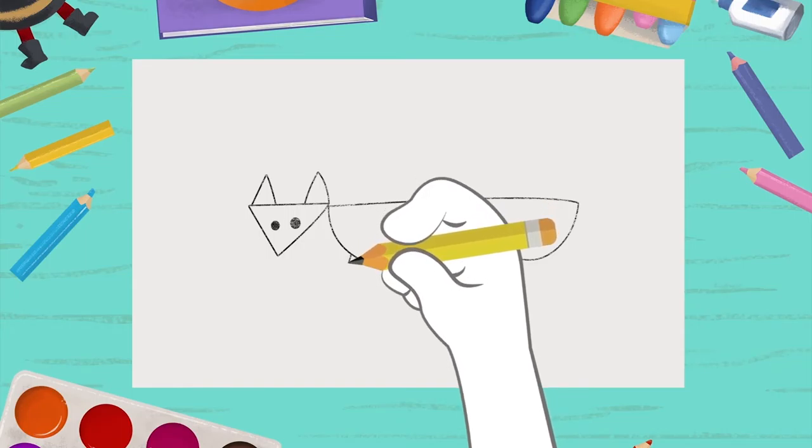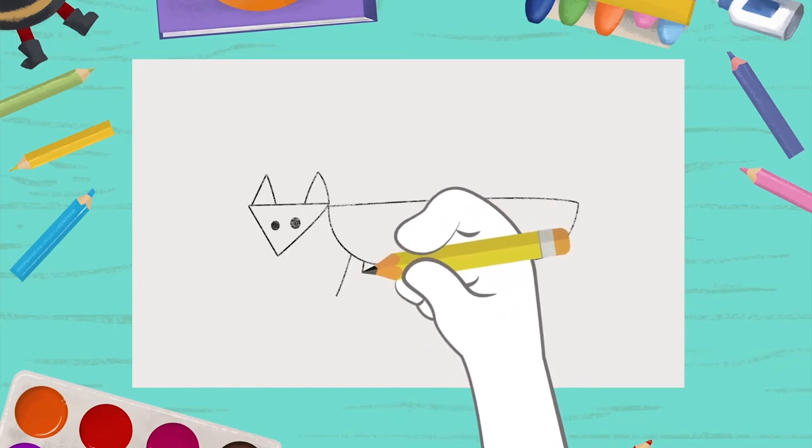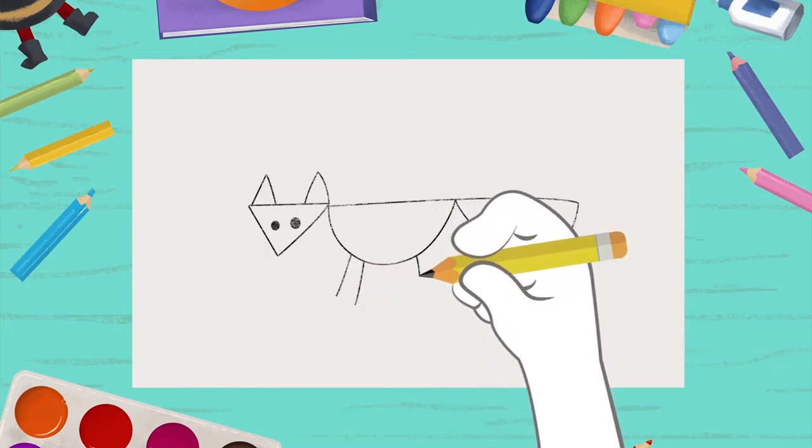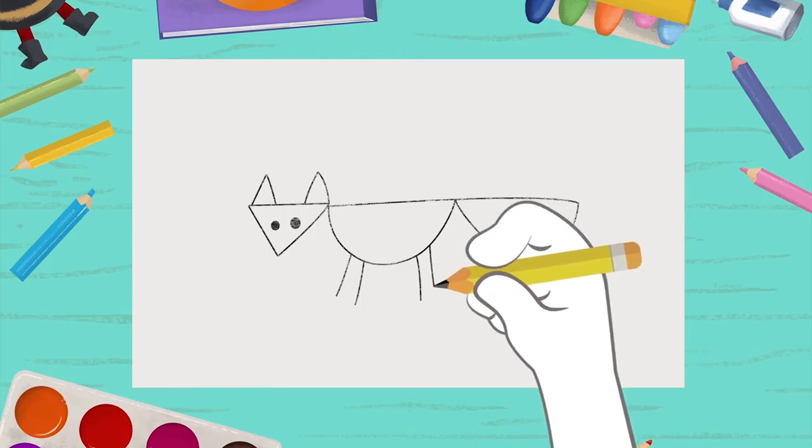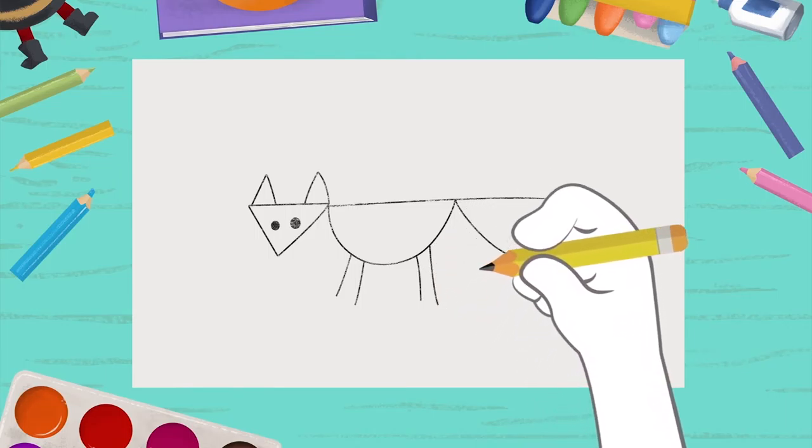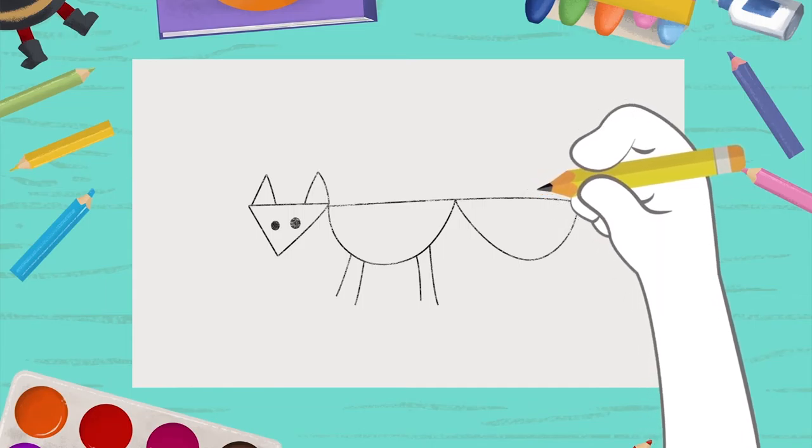With four lines here, you draw the legs. Here, you finish the tail.